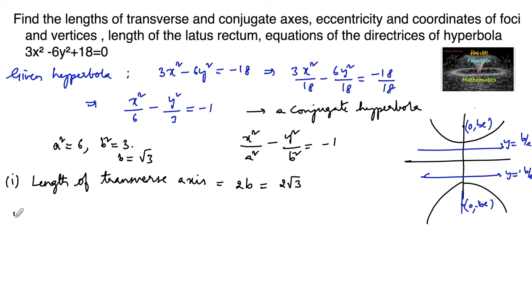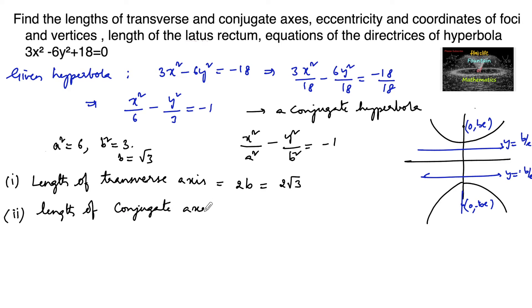Next, the length of the conjugate axis equals 2a. Since a² equals 6, a equals √6, so the conjugate axis length is 2√6.